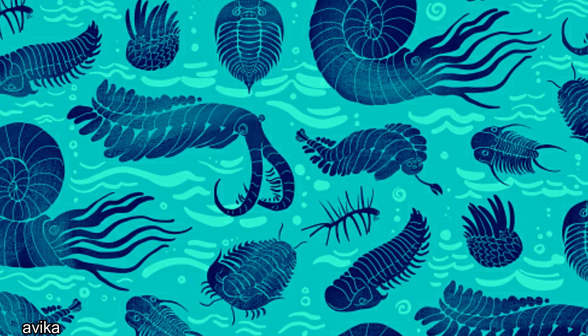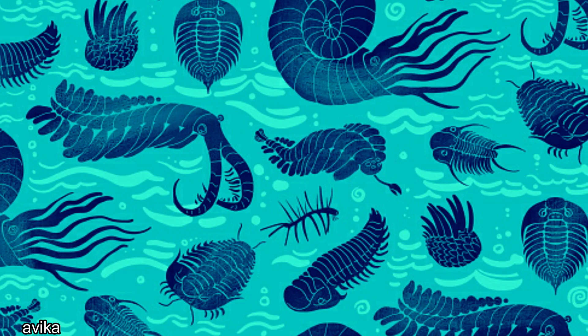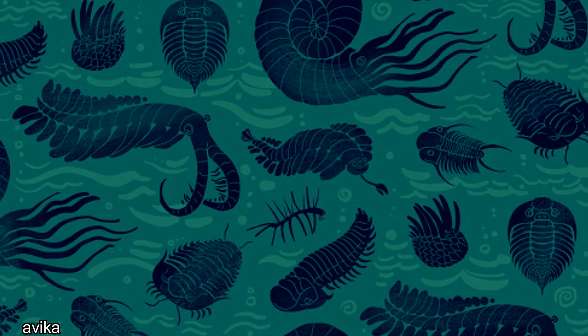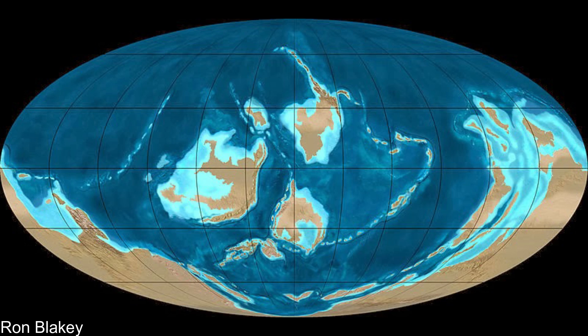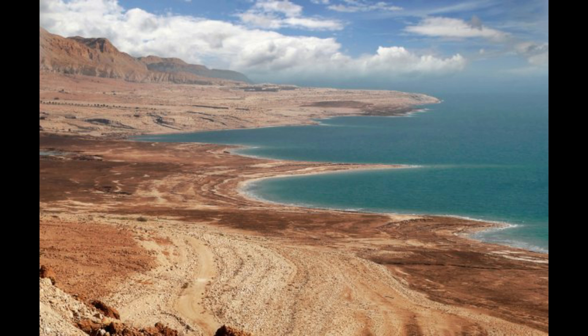The air was filled with carbon dioxide and the world heated up, making sea levels rise to almost 2,000 feet higher than what they are today. Shallow oceans covered much of the supercontinent Gondwana, though the land itself was still mostly dry, barren, and lifeless. The oceans, however, were another story entirely.